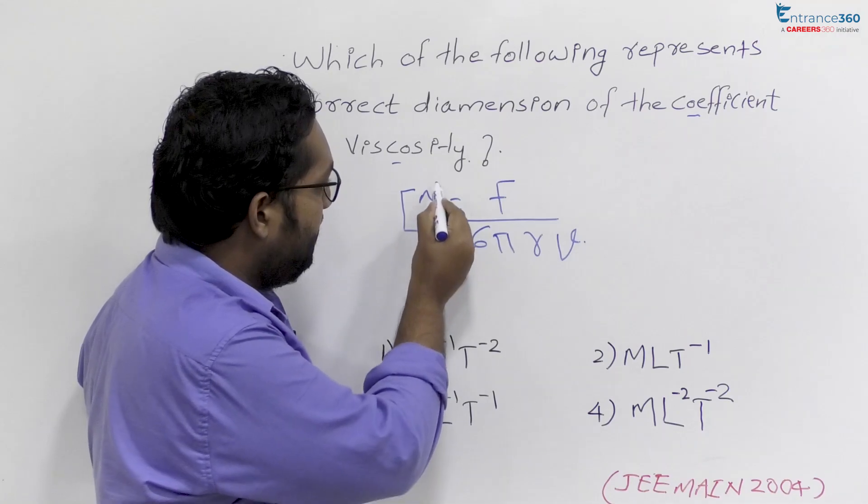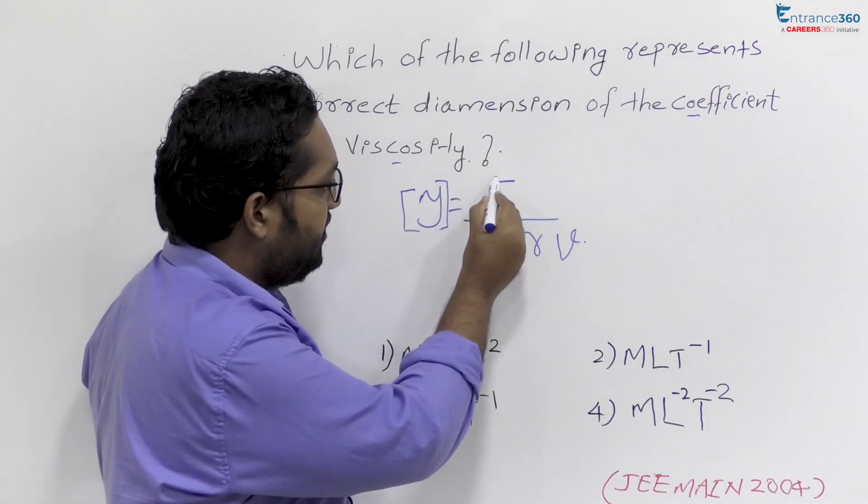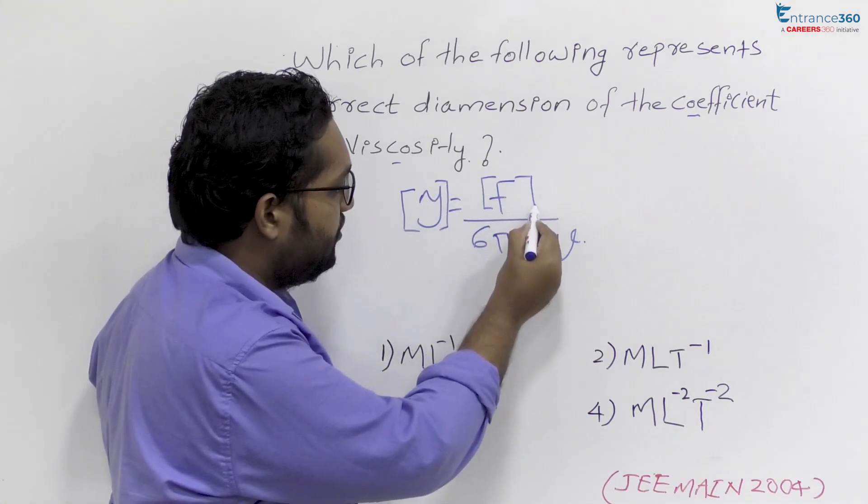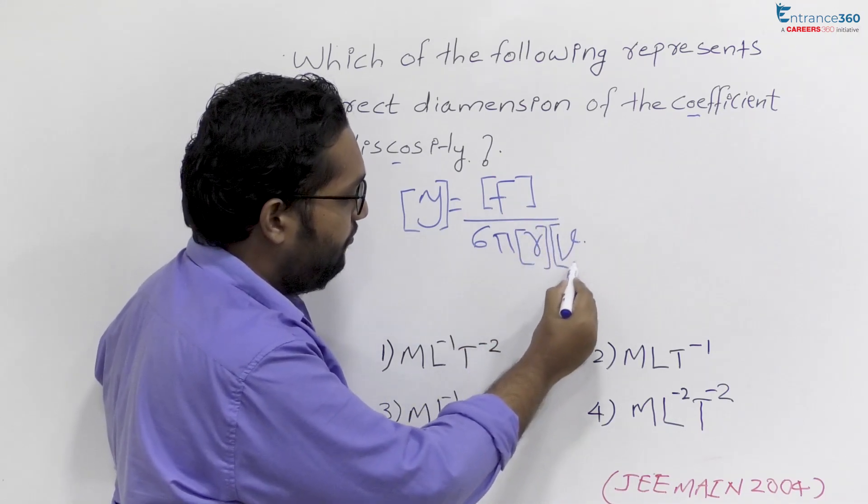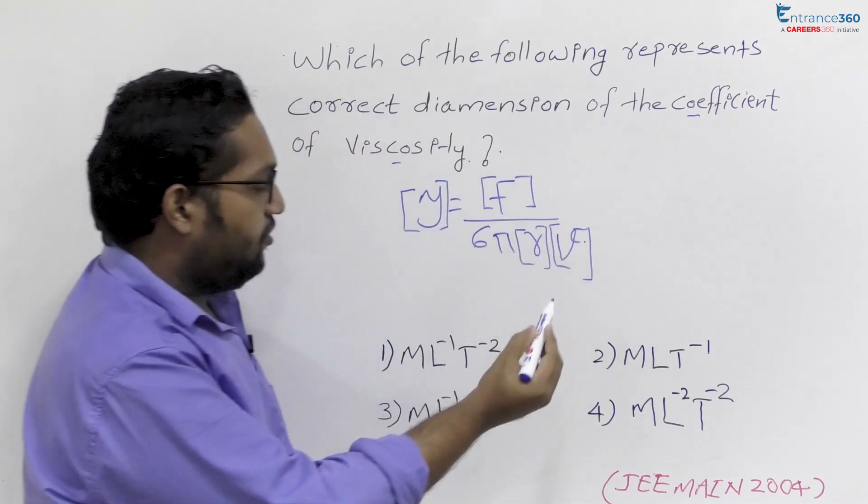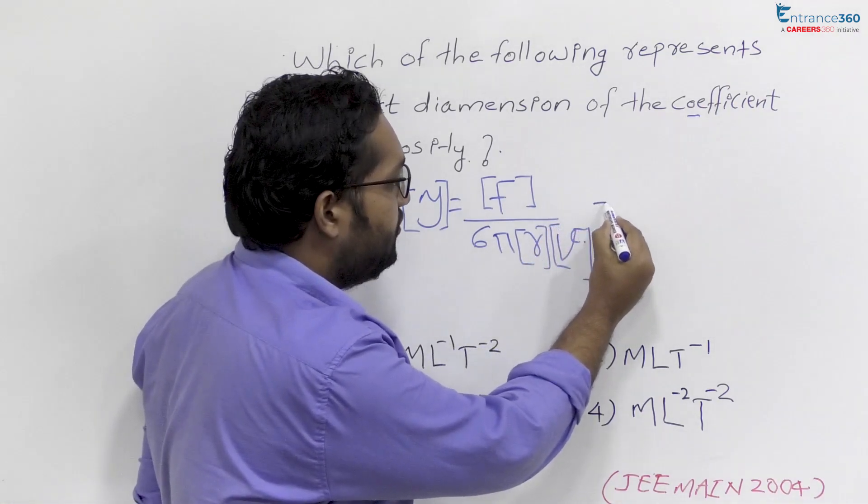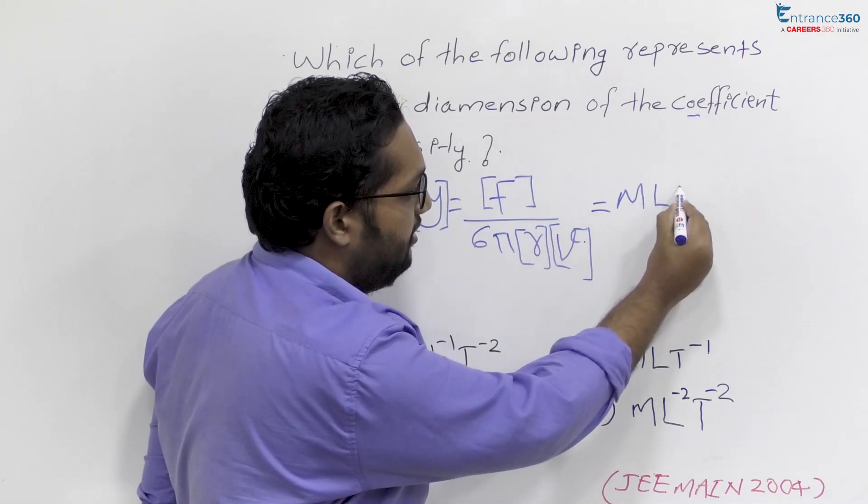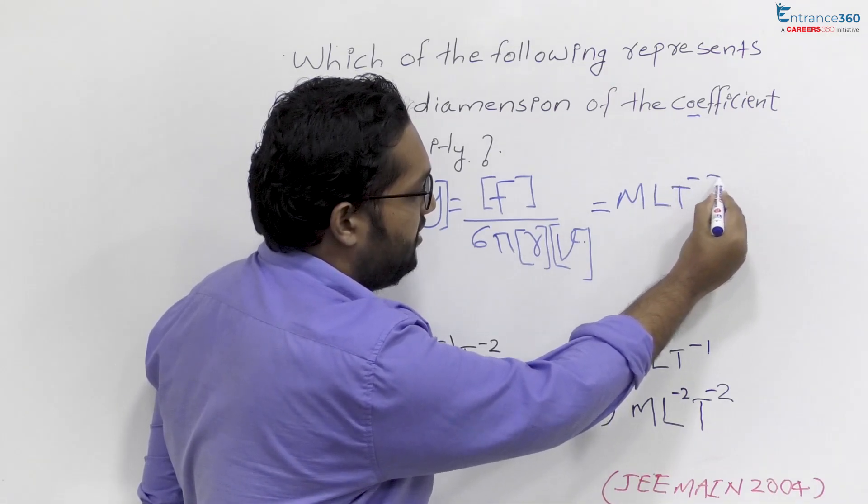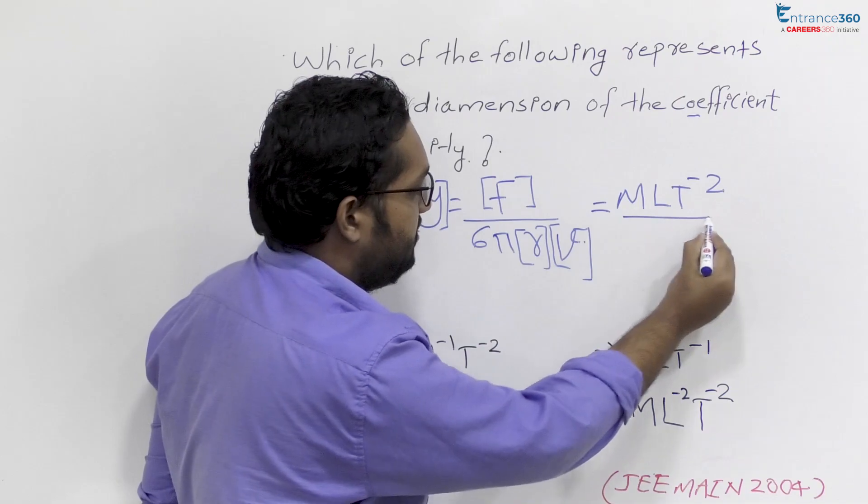Dimension of eta or coefficient of viscosity is dimension of force into dimension of R into dimension of V. What is the dimension of force? Mass into acceleration is MLT⁻² upon 6π